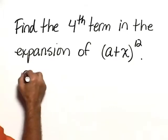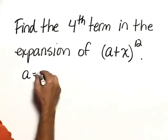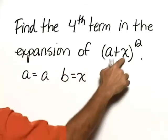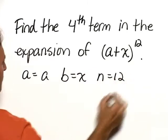So first, in this case, a is actually equal to a, b is equal to x, n is equal to 12.